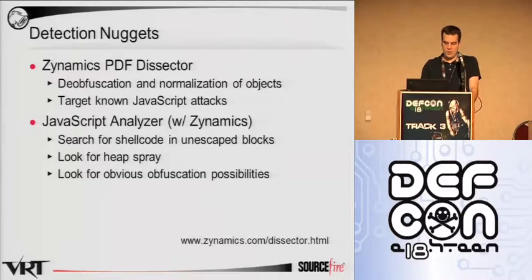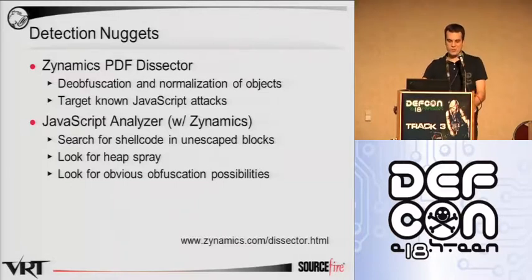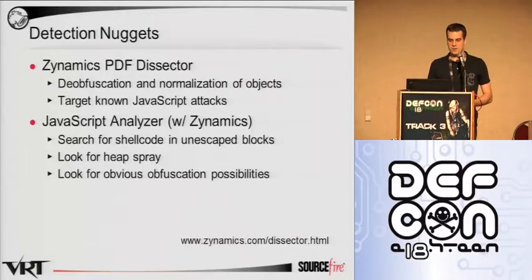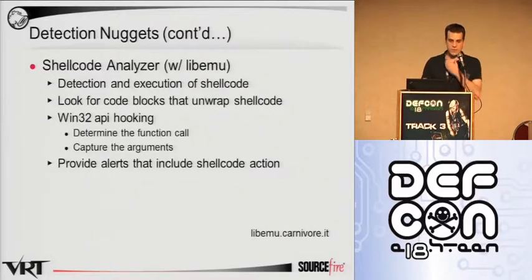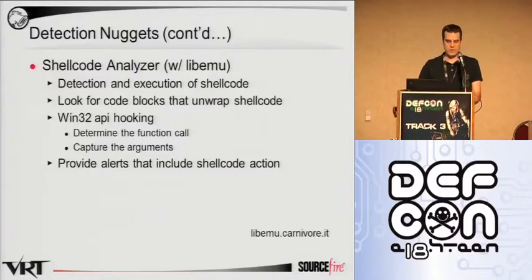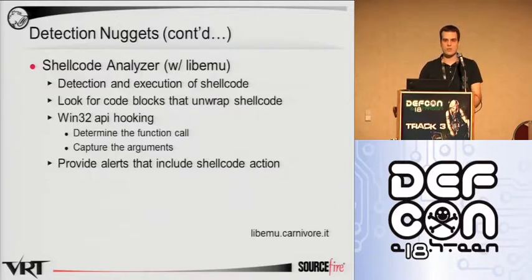Some simple pattern matching on large allocated heap blocks can allow us to look for potential heap spray attempts. Any shellcode that you find can be re-entered into the system and sent to a shellcode analyzer. For this we used LibMU. For those who are not familiar with it, it is a library that offers x86 emulation and shellcode detection and execution capabilities.